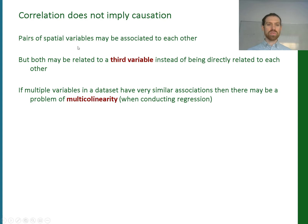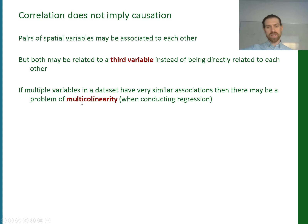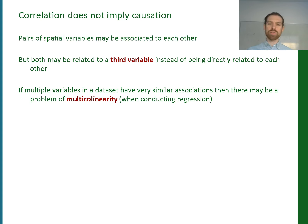Another example: people who have drowned after falling out of a fishing boat and marriage rates in Kentucky are reasonably strongly correlated over this time series, but obviously have absolutely no relationship to each other. Seeing a correlation in scatter plots doesn't mean there's a causal relationship — A leading to B. Often there are unexplained third variables directly related to what we're measuring. There could be multiple such variables across your dataset, which leads to a problem we'll cover next week called multicollinearity.